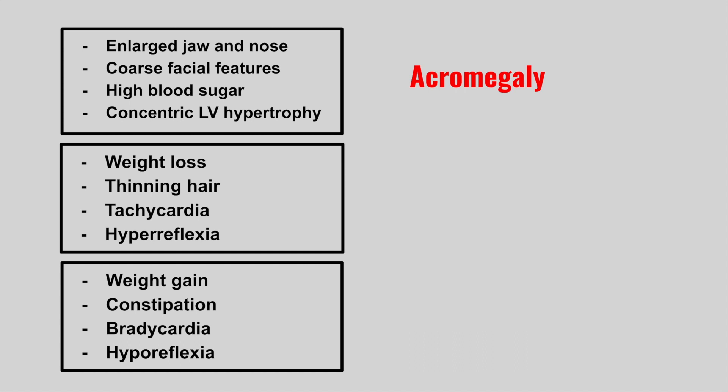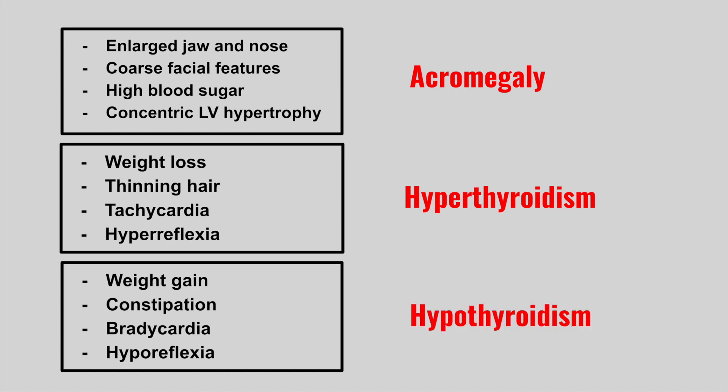The next patient has weight loss, thinning hair, tachycardia, and hyperreflexia — this is hyperthyroidism. The next patient has weight gain, constipation, bradycardia, and hyporeflexia — this is hypothyroidism.